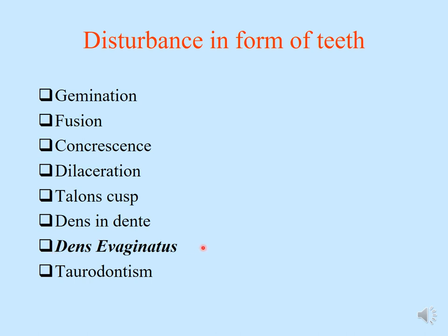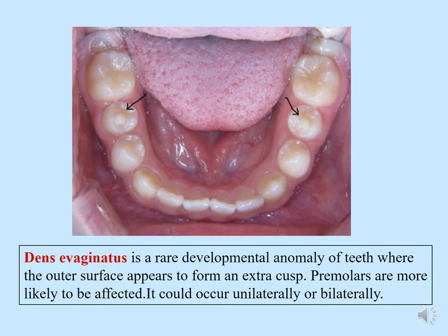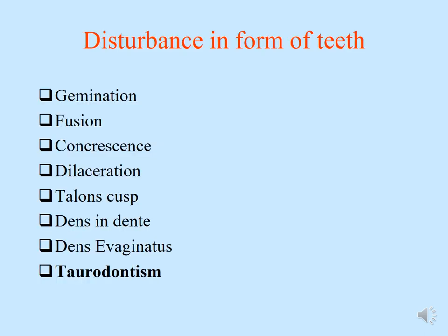The next is dens evaginatus — 'evaginatus' meaning a protuberance. Dens evaginatus is a rare developmental anomaly where the outer surface has an extra cusp or protuberance. It usually affects the mandibular premolars and can occur either unilaterally or bilaterally. The danger with these teeth is that there is usually an additional pulp horn present, which the dental surgeon must be aware of if root canal treatment is required.